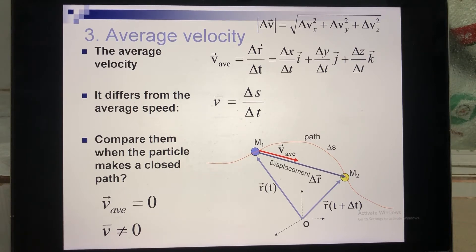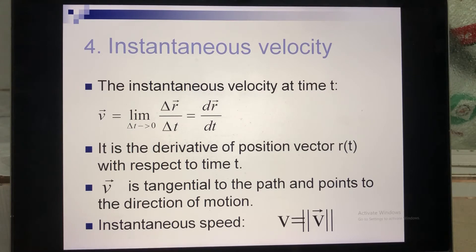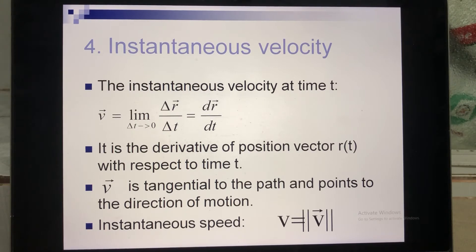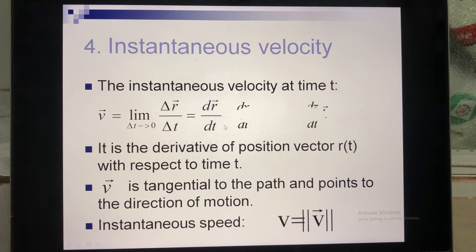Now we move to instantaneous velocity. To calculate it, you also take displacement divided by time, but in this case delta T is very small compared to one second. Since time is measured in seconds in the international system, when delta T is very small, you do not divide but instead take the derivative of R with respect to time.